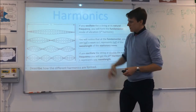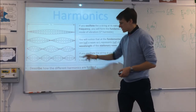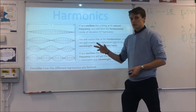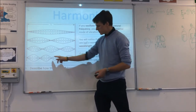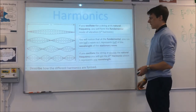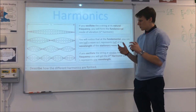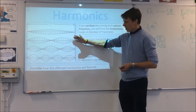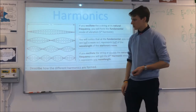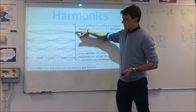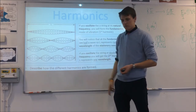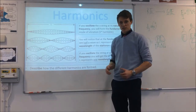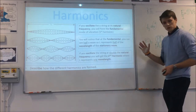You get the third harmonic by oscillating at three times the frequency, and the fourth harmonic by oscillating at four times the fundamental frequency — you've actually got two complete waveforms forming there. So those are your different harmonics. For those of you who play instruments, these are what is being produced when you pluck a guitar string. When you pluck a guitar string, you essentially create the fundamental, but you actually create all of these other modes of vibration at the same time, and those put together give you the sound — which sounds pretty nice if you've tuned your guitar correctly.